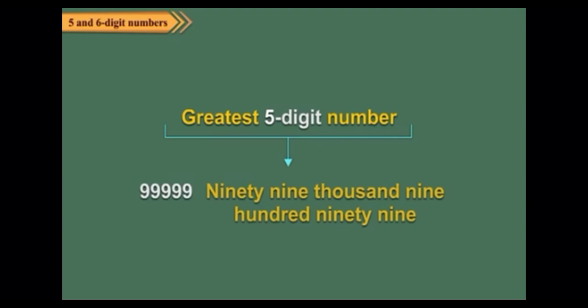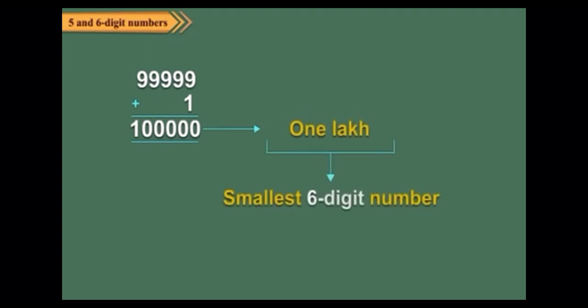Yes, it is read as ninety-nine thousand nine hundred ninety-nine. Again, on adding 1 to 99,999, we get 1 lakh, which is the smallest six-digit number. We read it as one hundred thousand. Here, the digit 1 is at the lakh place.